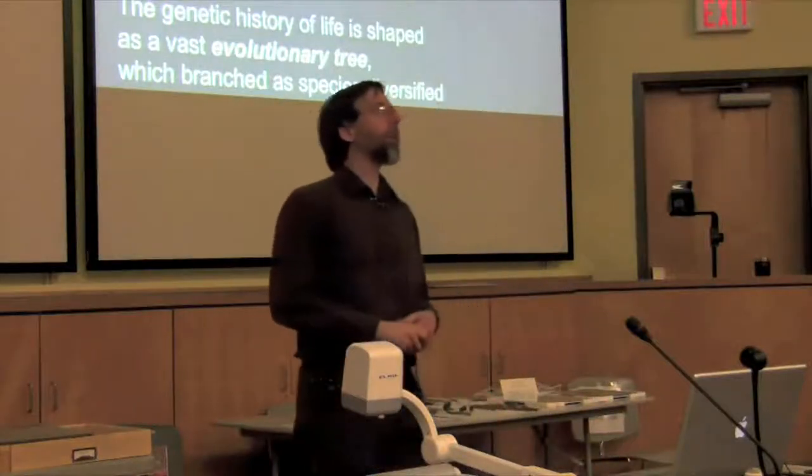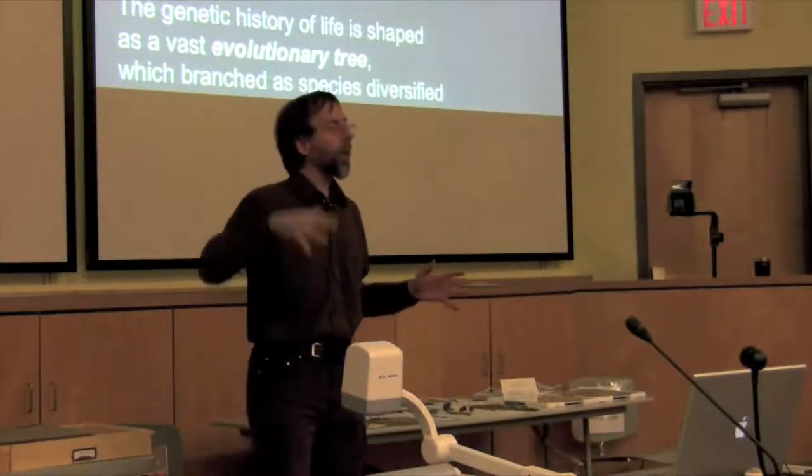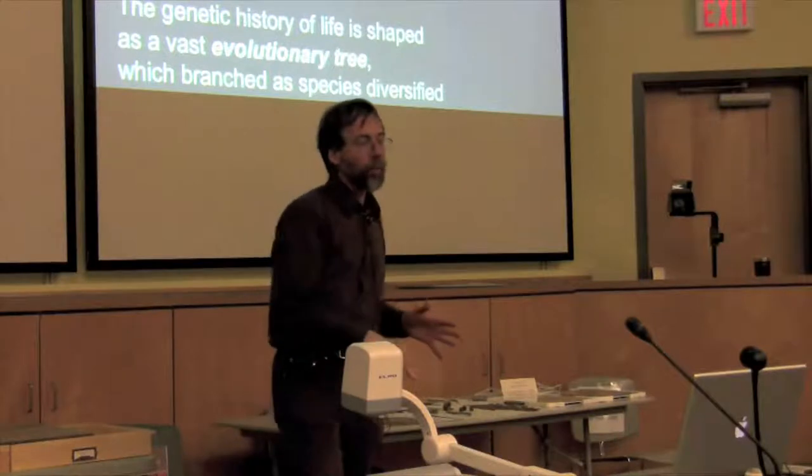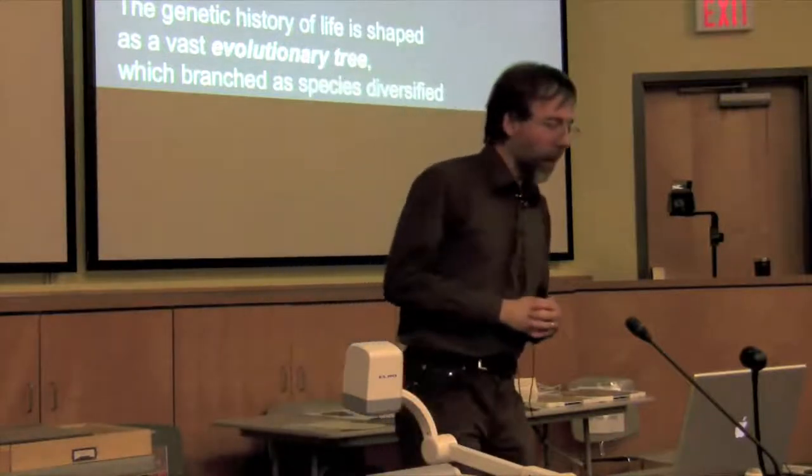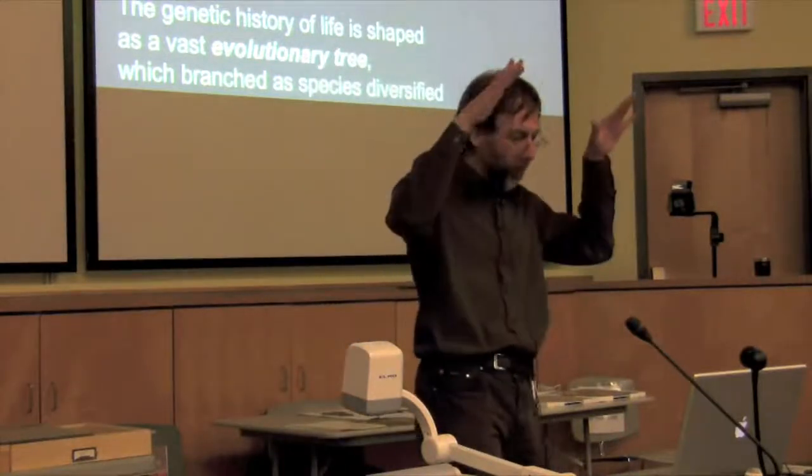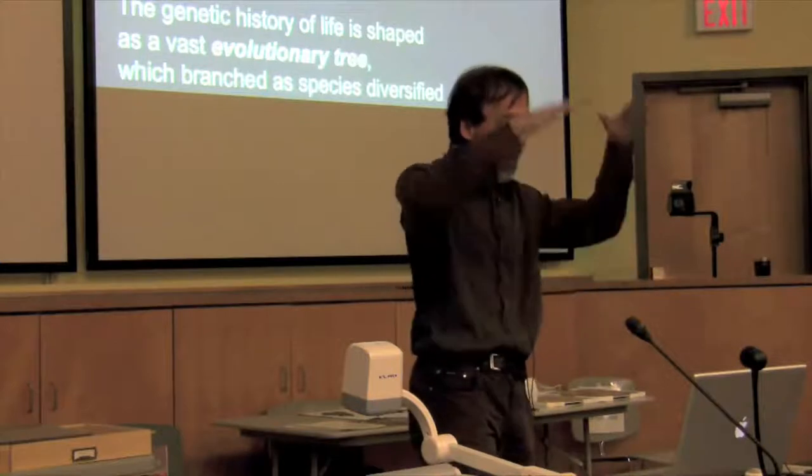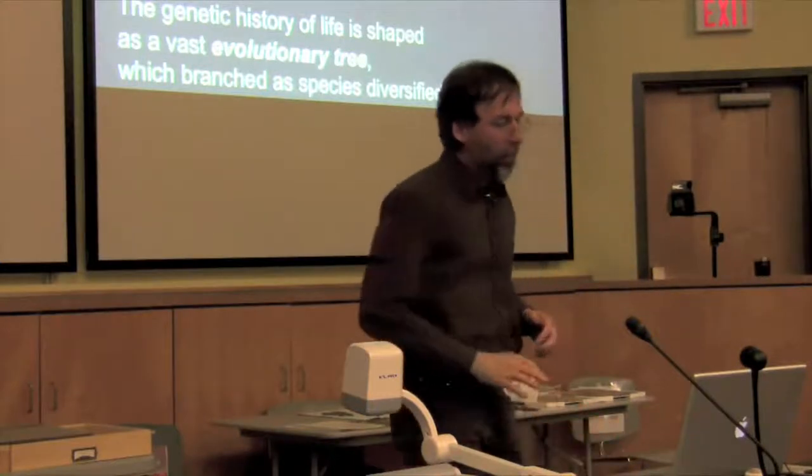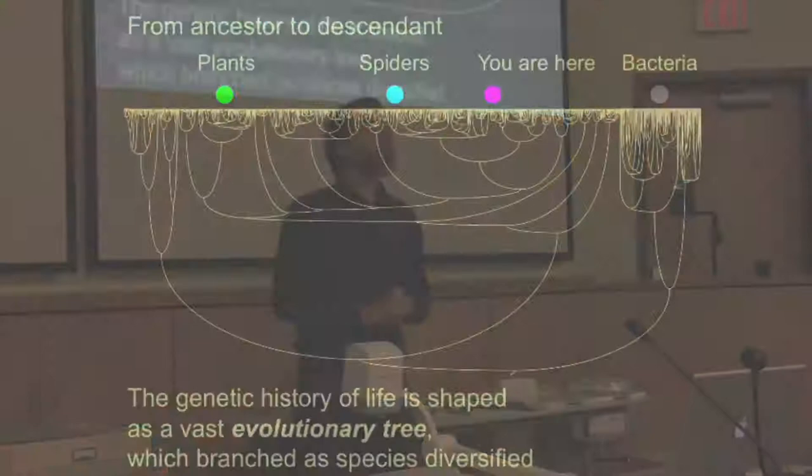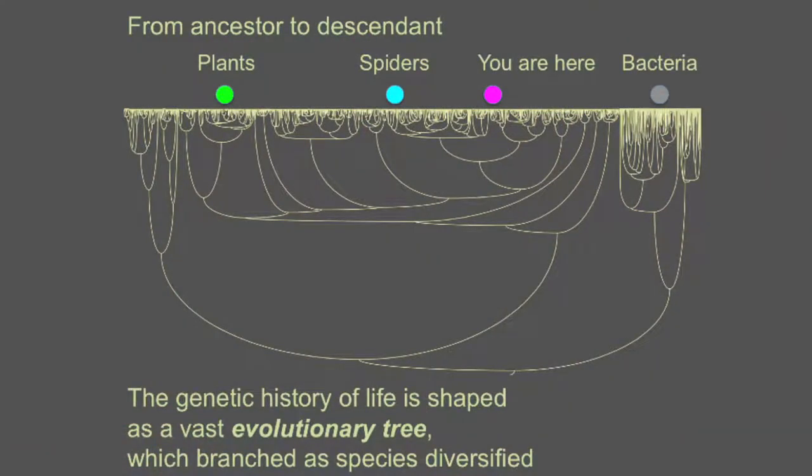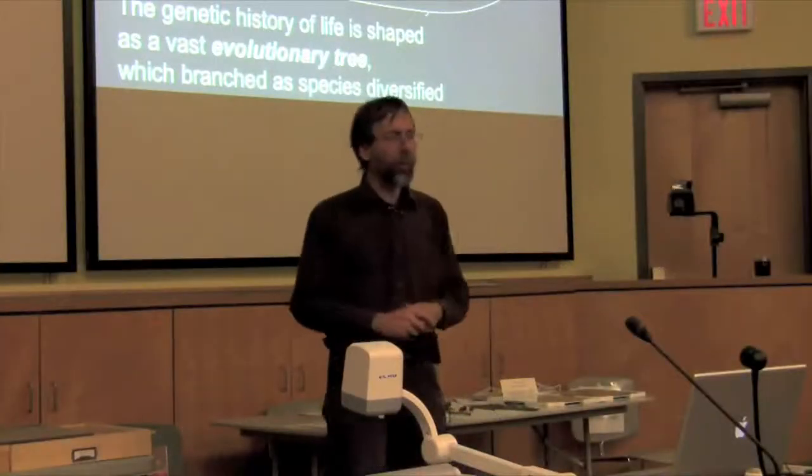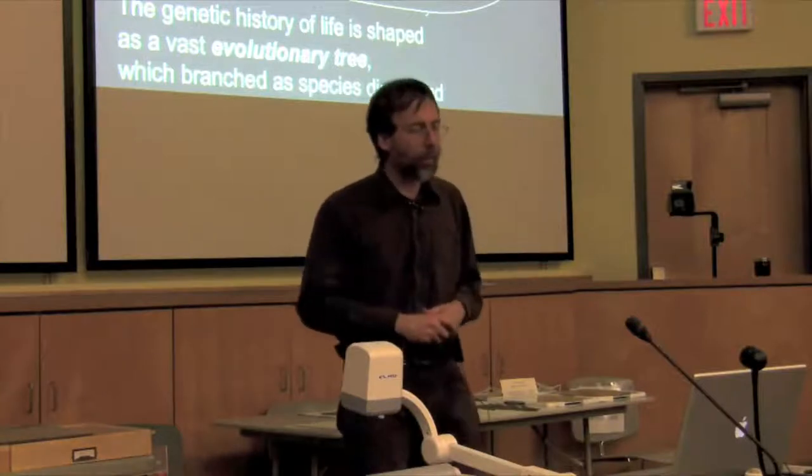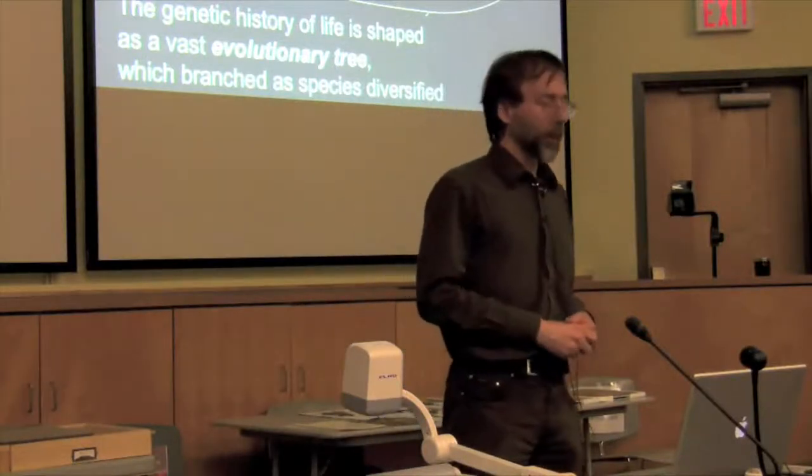This is the grand evolutionary tree of life. I've just talked about it as if we were looking down through from descendant to ancestor, but I want to now look at it from ancestor to descendant in the direction that time actually occurred. So the genetic history of life is shaped as a vast evolutionary tree which branched as species diversified. It's a little messier than this—there's issues near the root about horizontal transfer and so forth—but in broad brushstrokes, this is the shape of genetic history.